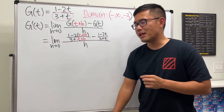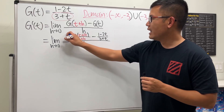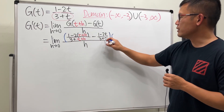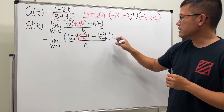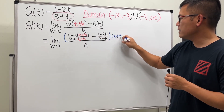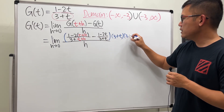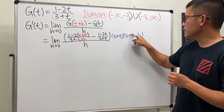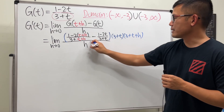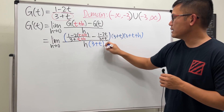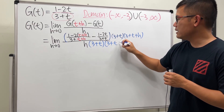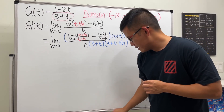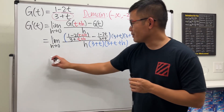To handle the complex fractions, we'll multiply the top and bottom by the lowest common denominator, which is (3 + t)(3 + t + h). We multiply both the numerator terms and the denominator by (3 + t) and (3 + t + h).